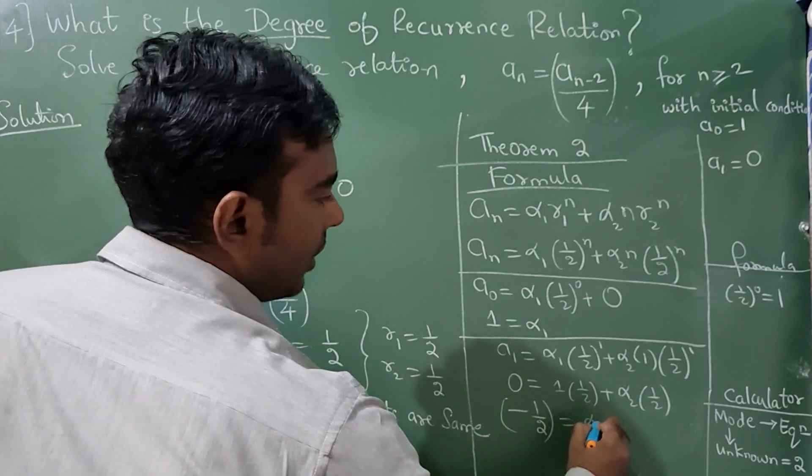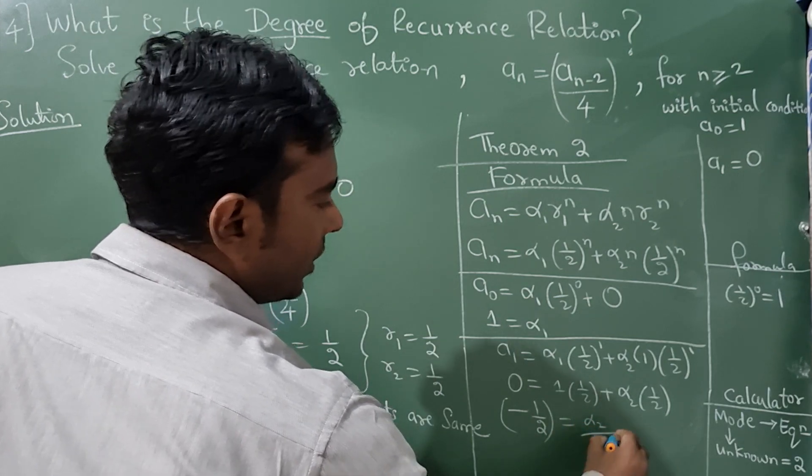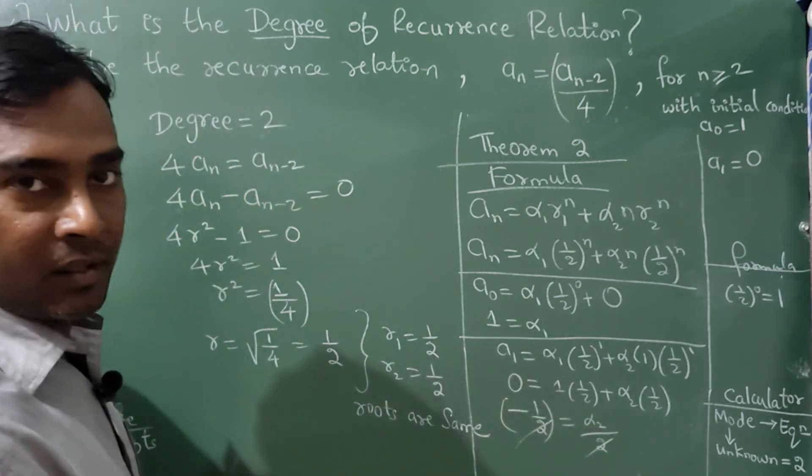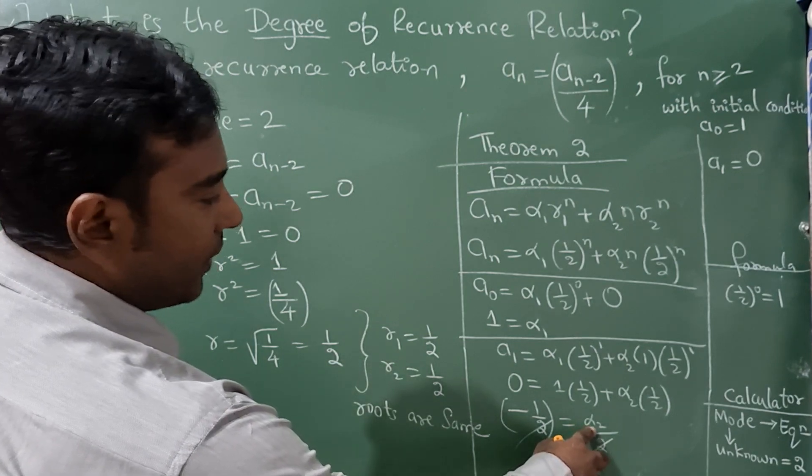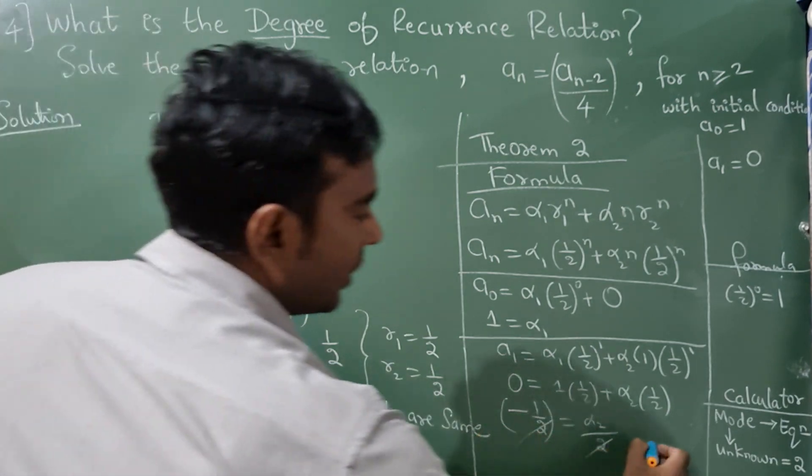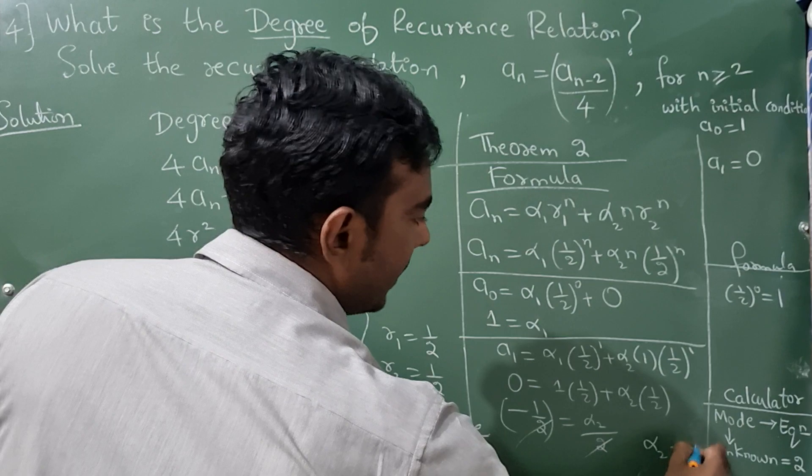-1/2 = α₂/2. This 2 and this 2 get cancelled, so what is the value of α₂? -1. So α₂ = -1.